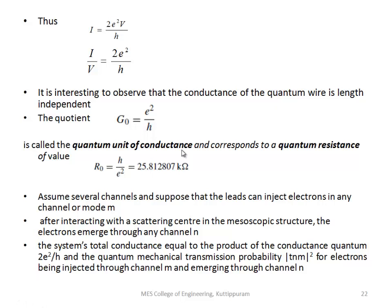So the conductance G0 equals 2e-squared by h. This is the quantum unit of conductance. The quantum resistance is the inverse of conductance, so R0 is equal to h by e-squared. Substituting Planck's constant and the electron charge, the value will be 25.812 kilo-ohms.